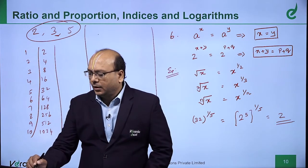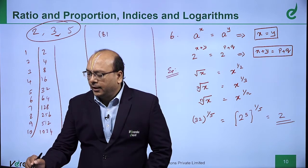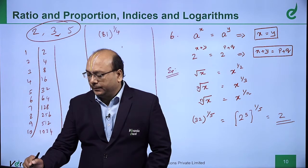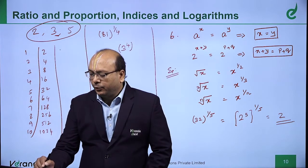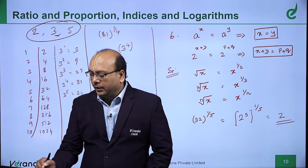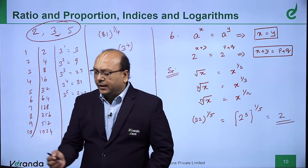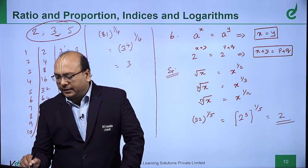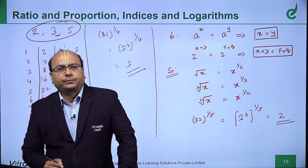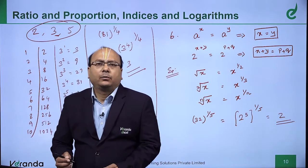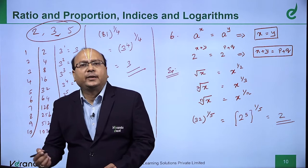Another example: 81^(1/4). Looking at 81, it is 3^4. You should know 3^1=3, 3^2=9, 3^3=27, 3^4=81, 3^5=243. So (3^4)^(1/4): the 4 and 1/4 cancel, giving the answer 3.